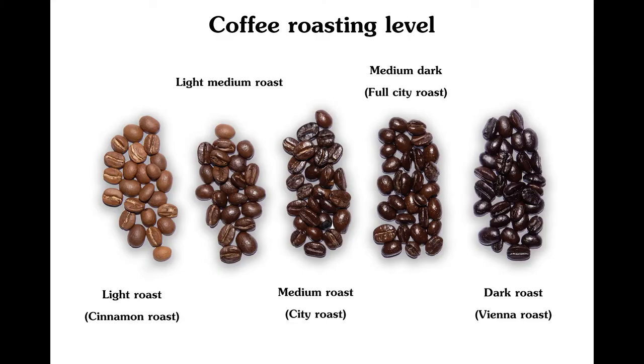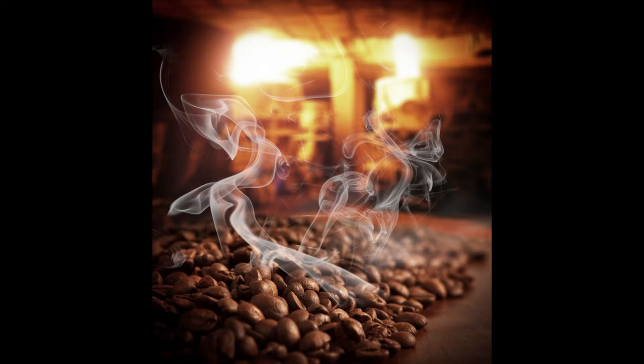Let's move on to roast levels. Generally, there are three: light, medium and dark roast coffee. Light roast coffee beans are roasted for a shorter amount of time than medium or dark. This produces coffee that has a lighter colour, a drier surface, and a more pronounced acidity compared to darker roasts.